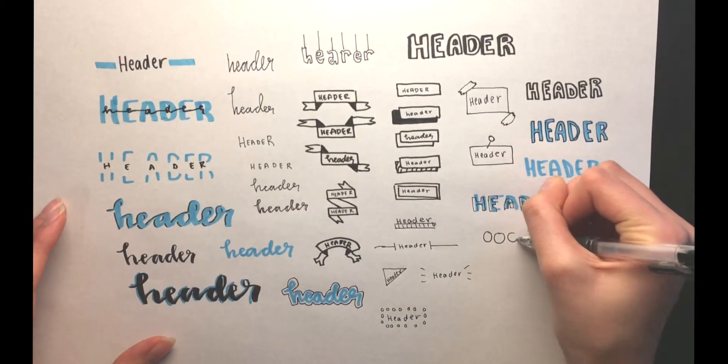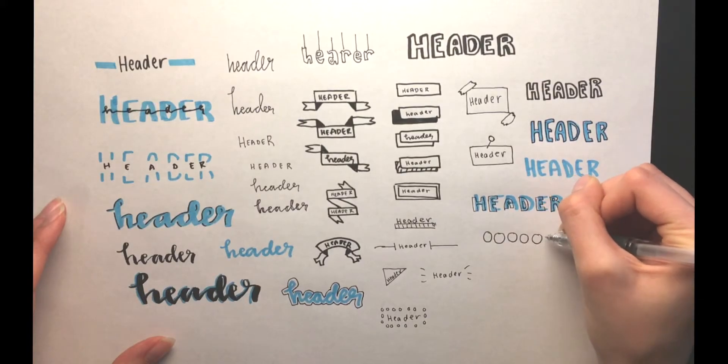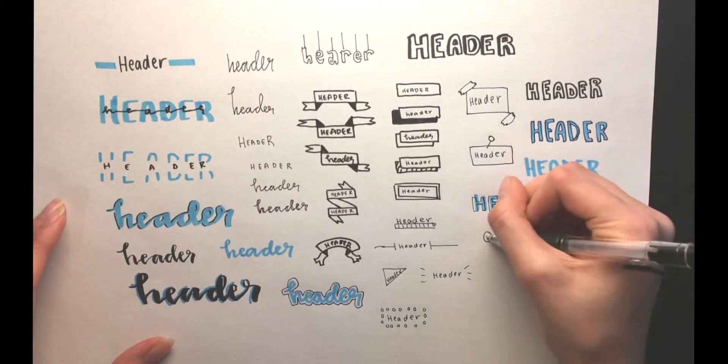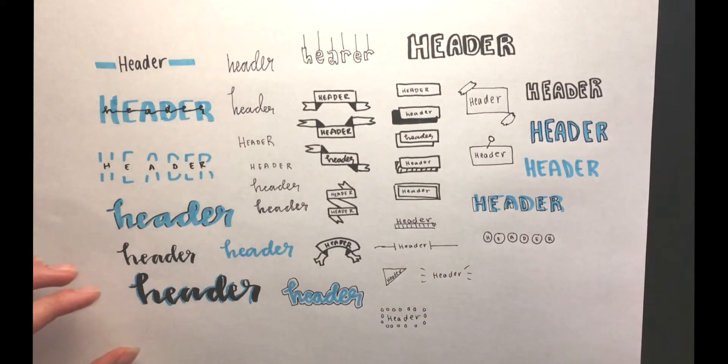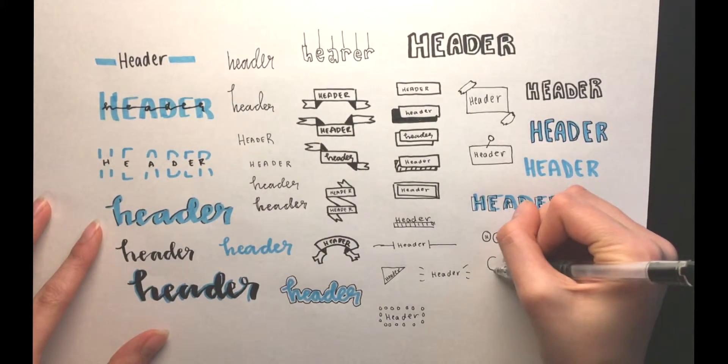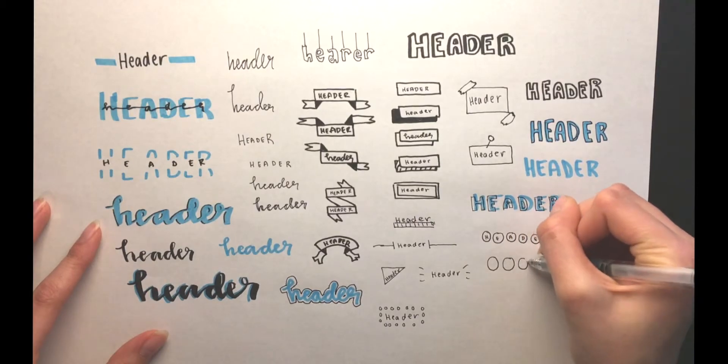So next, I am going to be drawing out circles for each letter as a header. This one I don't use as much, and you can use other shapes as well, but I just decided to try it out.